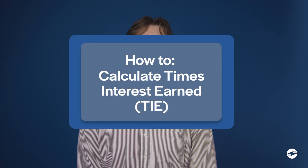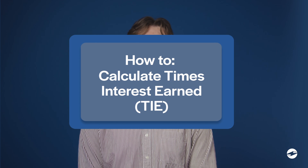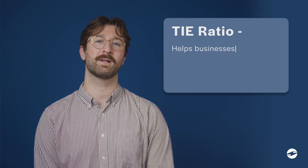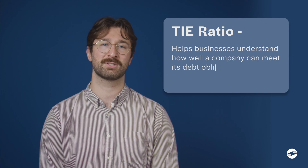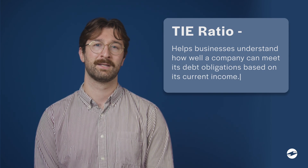Hey guys, Nate here with another video. Today we're going to be talking about how to calculate the times interest earned ratio, otherwise known as the TIE ratio. The TIE ratio helps you understand how well a company can meet its debt obligations based on its current income. It's a crucial metric for assessing a company's financial health and risk level.